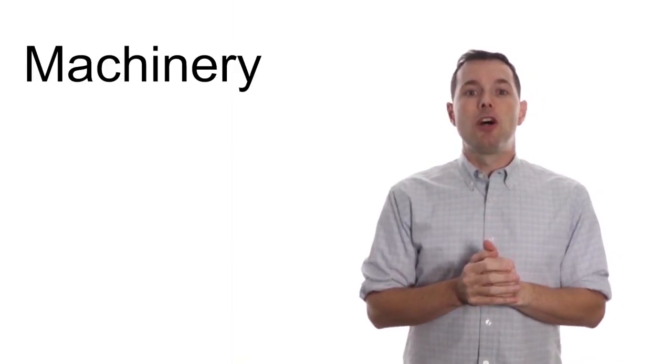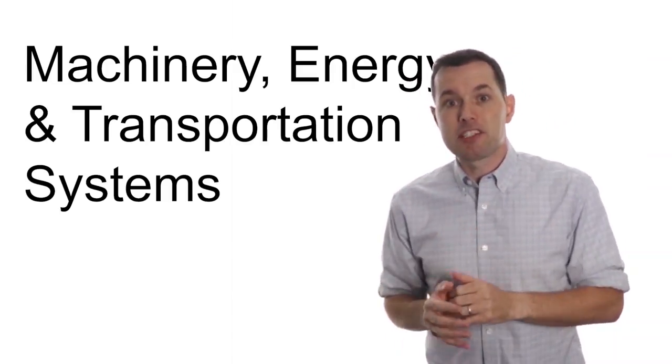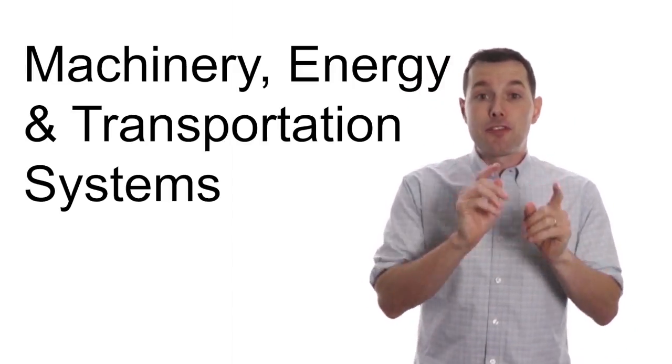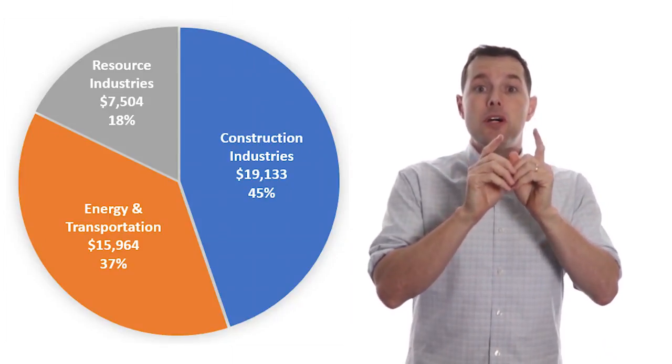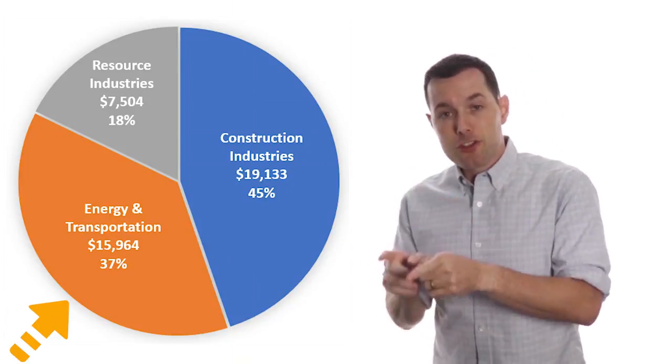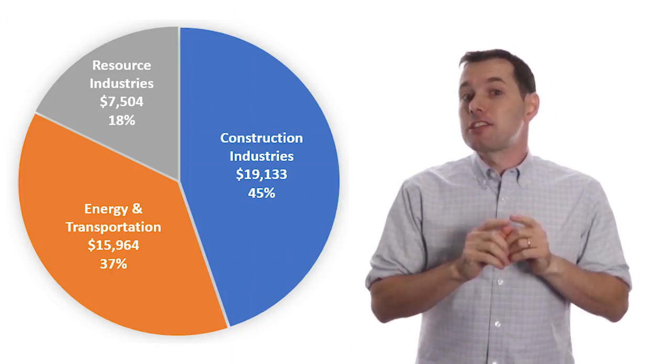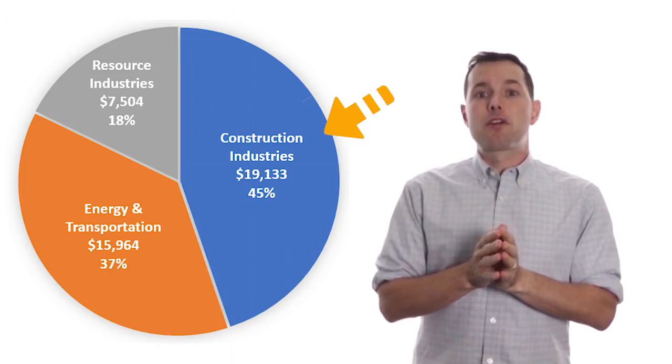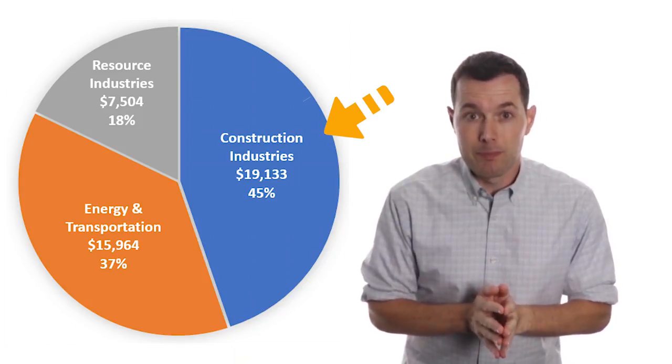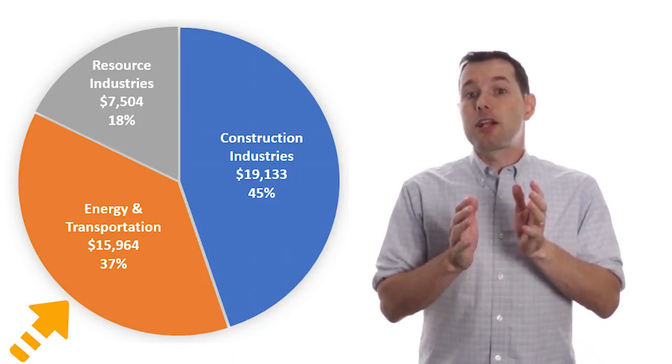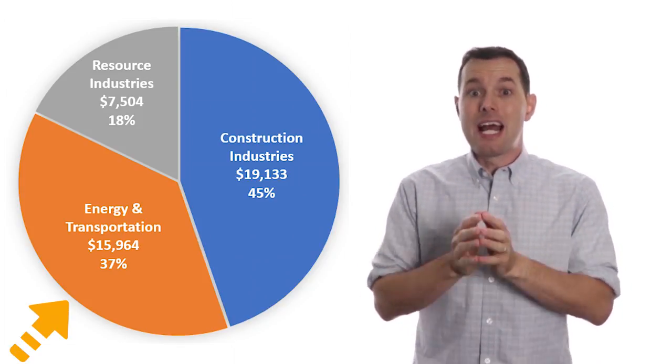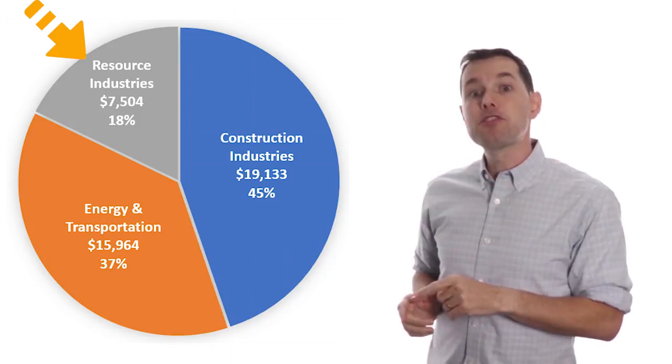Now the machinery segment is actually called machinery energy and transportation systems, and it's further broken down into construction industries, energy and transportation, and resource industries. Last year construction industries accounted for about 45% of total revenue, energy and transportation accounted for about 37%, and 18% was resource industries.